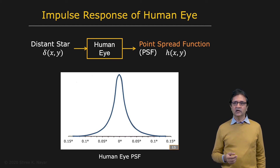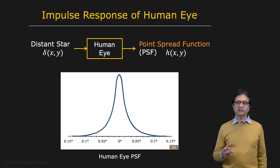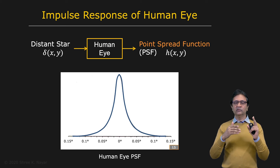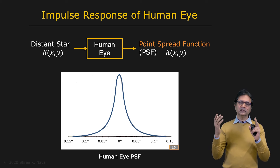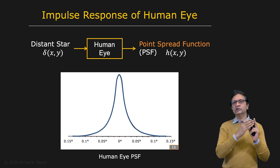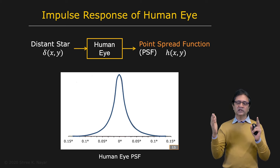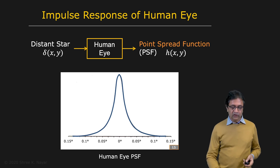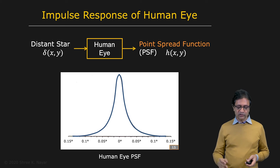So let's take a look at the impulse response of an imaging system — in this particular case, the human eye. We know the human eye has a lens and it forms an image on the retina. And we want to know what is the relationship between a perfect focused image out there in the scene and the image that ends up landing on your retina. Since lenses are linear and shift invariant, as we discussed earlier, we want to know what is the impulse response of the human eye.